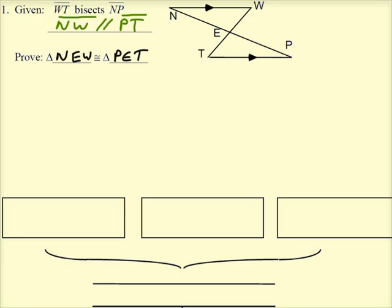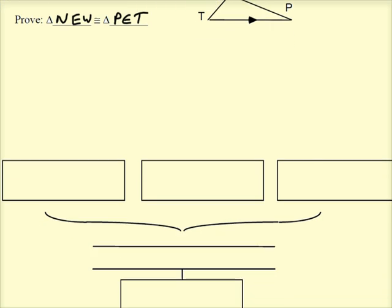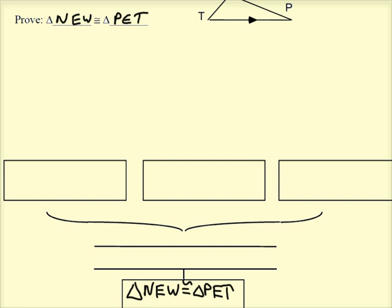So right away, we know that the given statements are there, but the proof statement, that's what we're trying to prove, so that goes in that last box down here. And in the previous slide, we ascertained that we're going to use the ASA theorem to prove that.